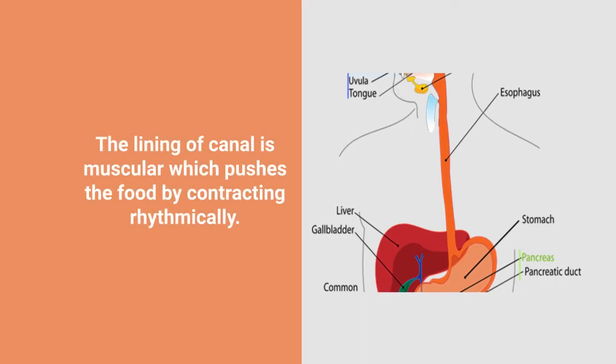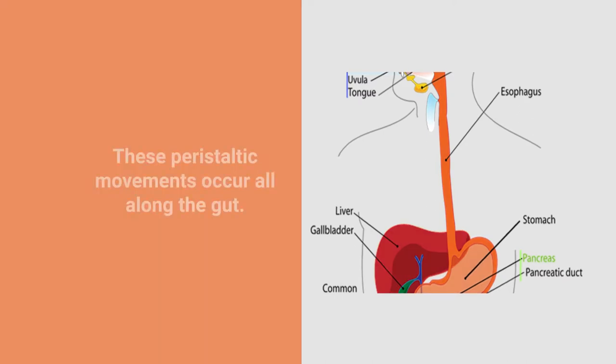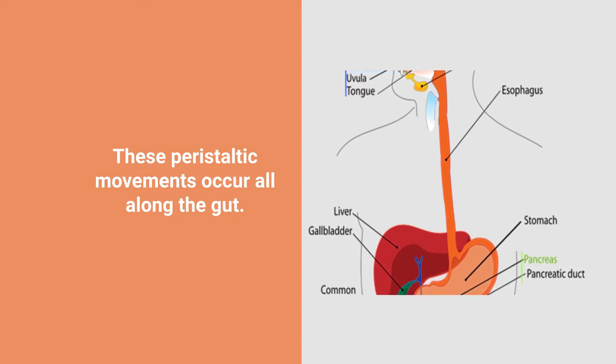They may not know that the esophagus has a muscular lining which contracts rhythmically, and this rhythmic contraction pushes food from the mouth towards the stomach. The whole gut has these peristaltic movements, and these peristaltic movements basically help move food from the mouth to the stomach.